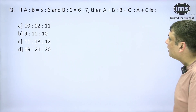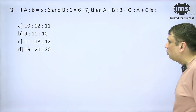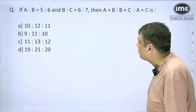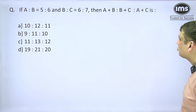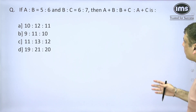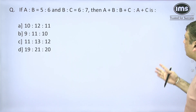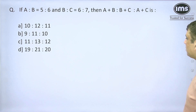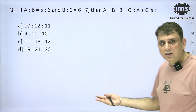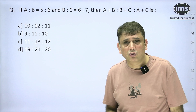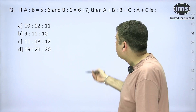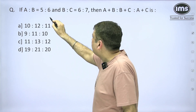The question is: if A is to B equals 5 is to 6, and B is to C equals 6 is to 7, then what is A+B : B+C : A+C? This is a 2024 question and it's a very easy one.